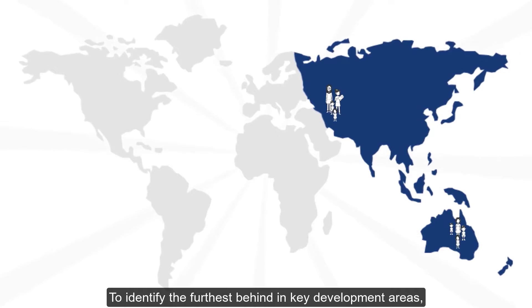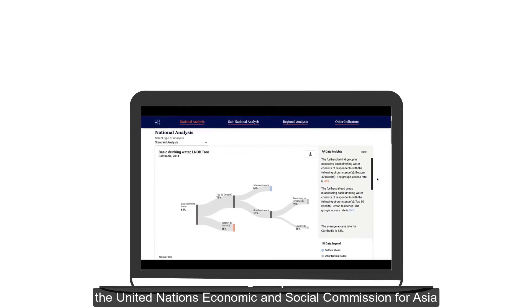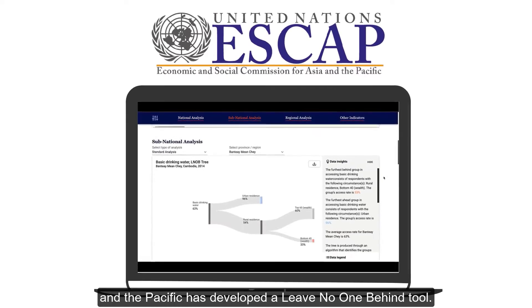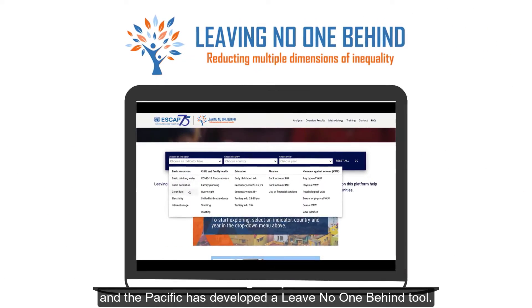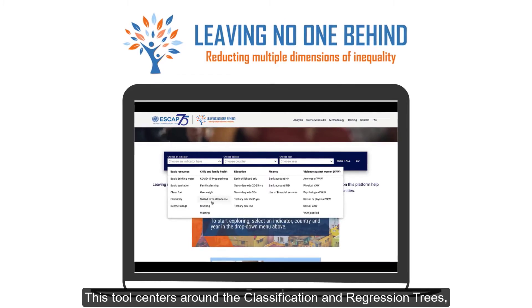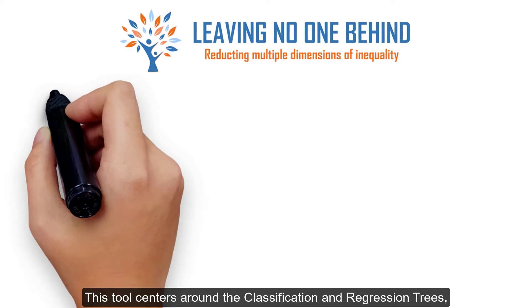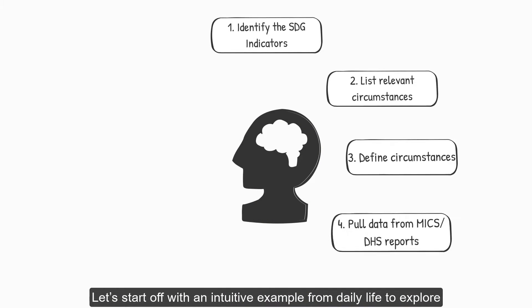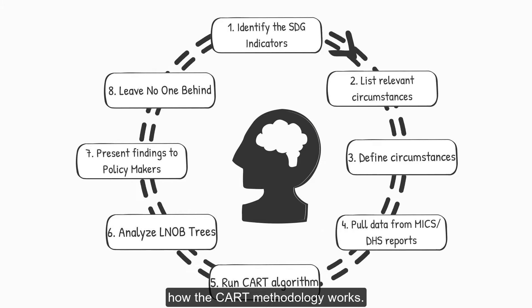To identify the furthest behind in key development areas, the United Nations Economic and Social Commission for Asia and the Pacific has developed a Leave No One Behind tool. This tool centers around the classification and regression trees, also known as CART. Let's start off with an intuitive example from daily life to explore how the CART methodology works.